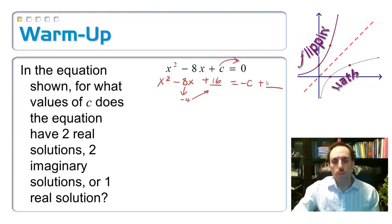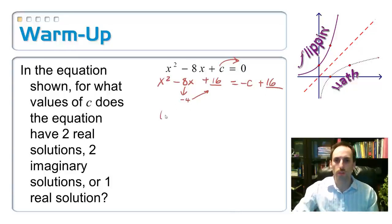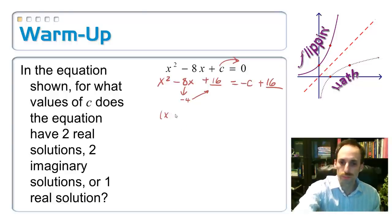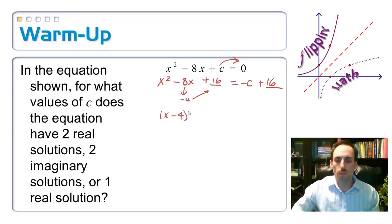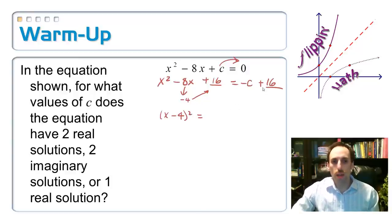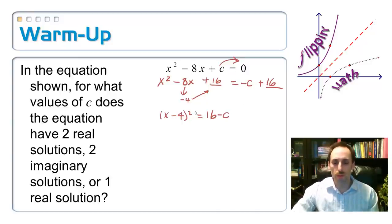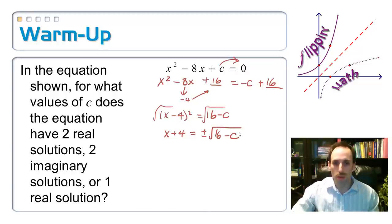If I added 16 to the left, let's go ahead and add 16 to the right side as well. The left-hand side factors as x minus 4 squared, and I like to have my positive number first, so I'll write 16 minus C on the right. The next step is to take the square root of both sides, giving us x minus 4 equals plus or minus the square root of 16 minus C.